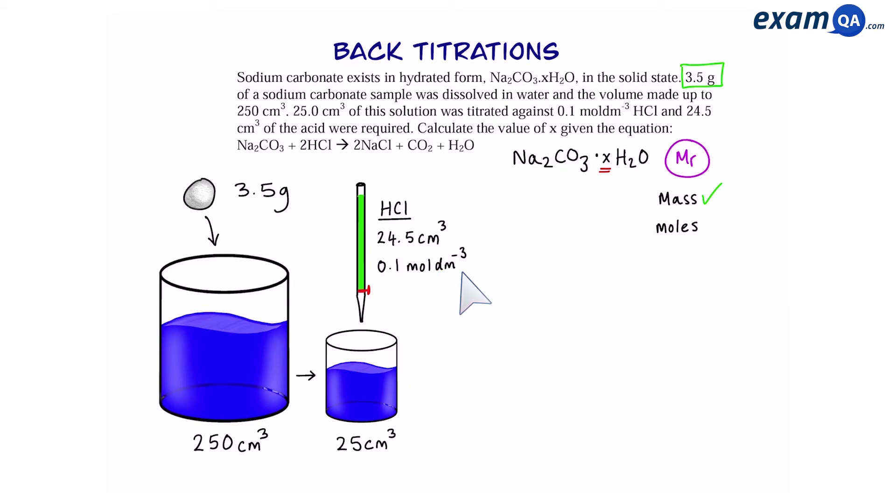Now remember, we wanted to work out the moles of sodium carbonate. We can start off by working out the moles of hydrochloric acid. Using the formula, moles equals concentration times volume over 1000. This gives us 2.45 times 10 to the power of minus 3. According to the balanced equation, we can see that hydrochloric acid and sodium carbonate have a 1 to 2 ratio. That means I can divide the moles of hydrochloric acid by 2 and work out the moles of sodium carbonate.